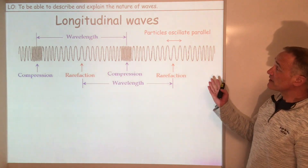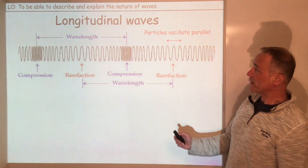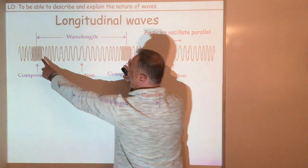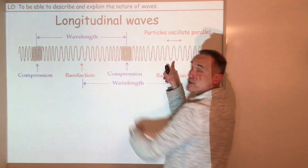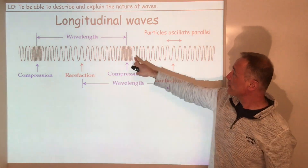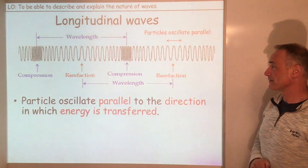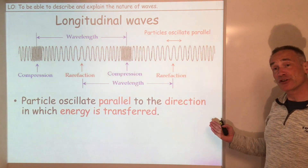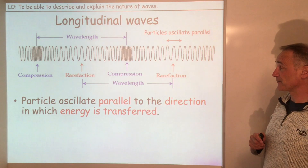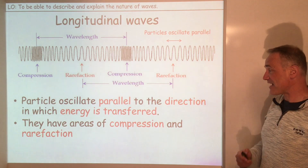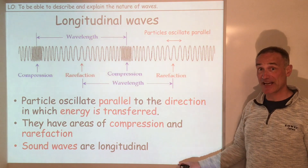So for longitudinal waves — this is a picture you might get in your exam, which is like a slinky spring — a wavelength can be between two compressions or it could be between the centre of two rarefactions, which are low pressure. I would always do it from the centre of two compressions; it's easier to see where they are. For longitudinal waves, the particles oscillate parallel to the direction in which energy is transferred. They have areas of compression and rarefaction. And the key one you need to know is sound waves are longitudinal.